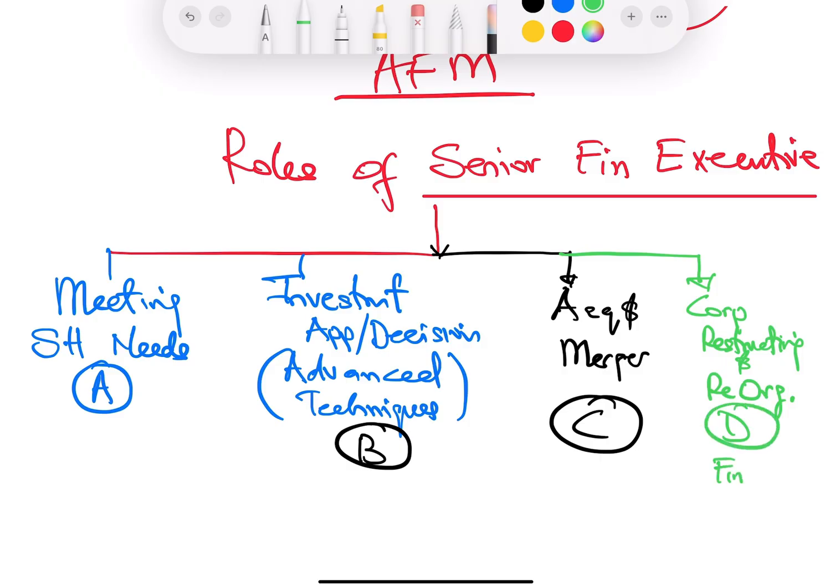And here, what you learn under financing, business finance, under FM, will come into play as well. So it's the investment appraiser method you leverage in Section B. Here, you leverage financing. Very important. That's Section D. And Section E is your risk management.